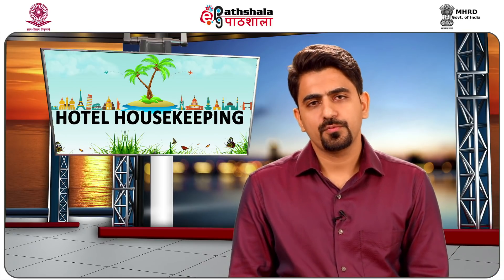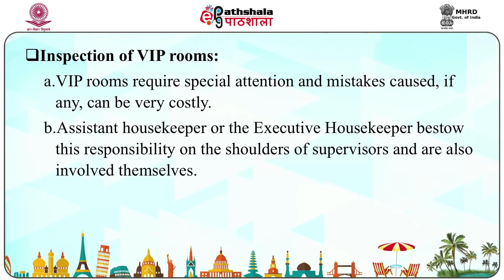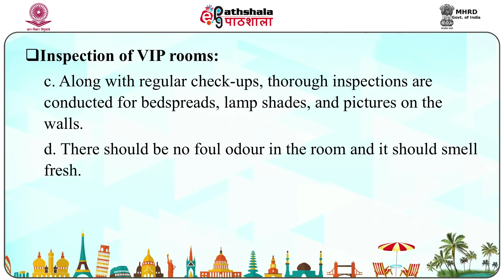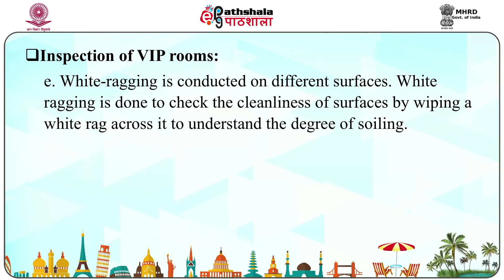Next is inspection of VIP rooms. VIP rooms require special attention and mistakes, if any, can be very costly. The assistant housekeeper or the executive housekeeper bestow this responsibility on the shoulders of supervisors and are also involved themselves. Along with regular checkups, thorough inspections are conducted for bedspreads, lampshades and pictures on the walls. There should be no foul odor in the room and it should smell fresh. White ragging is conducted on different surfaces — white ragging is done to check the cleanliness of a surface by wiping a white rag across it to understand the degree of soiling.